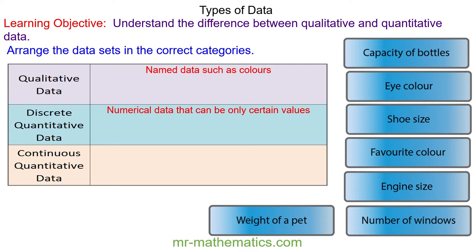And continuous quantitative data is numerical data that can be any value such as a time to complete a race.